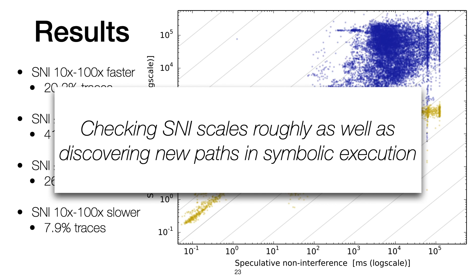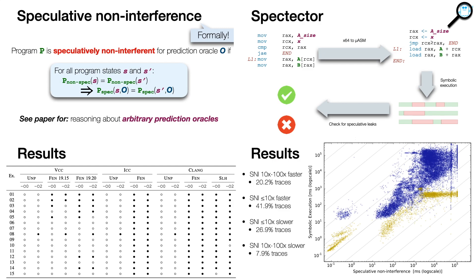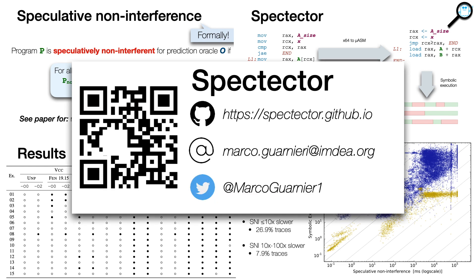Hence, our approach does not exhibit fundamental bottlenecks beyond those inherited by symbolic execution. To conclude, I presented speculative non-interference, a semantic notion of security against speculative execution attacks. We developed a principled approach for detecting leaks based on symbolic execution, and we implemented our approach in a tool called Spectator, which we used to identify subtle leaks in how compilers place countermeasures against Spectre attacks. Additionally, we evaluated Spectator's scalability on the Xen hypervisor codebase, and the main takeaway is that checking speculative non-interference scales roughly as well as discovering new paths in symbolic execution. Spectator is available on GitHub.